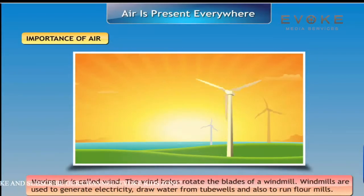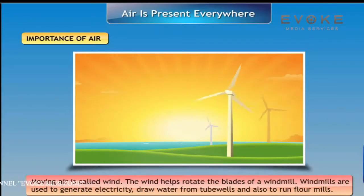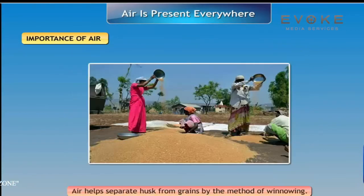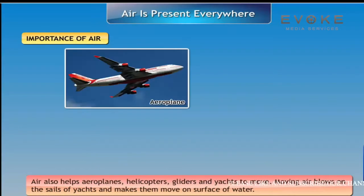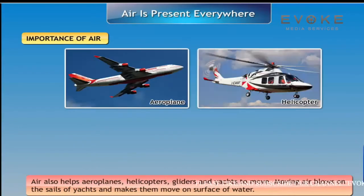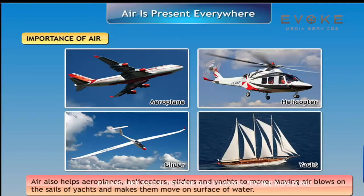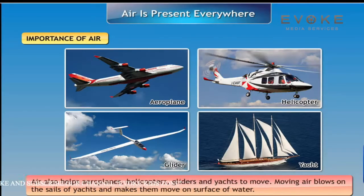draw water from wells and fields, and also to run flour mills. Air helps separate husk from grains by the method of winnowing. Air also helps aeroplanes, helicopters, gliders, and yachts to move.